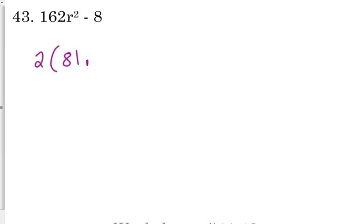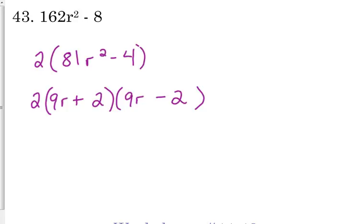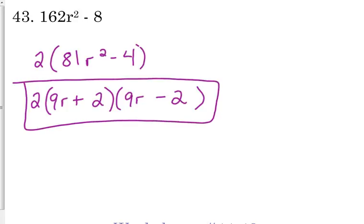That's 81R squared minus 4. Now, we have our conditions. 81 and 4 are perfect squares. 81 is 9 squared. And, 4 is 2 squared. So, two sets of parentheses. 1 plus 1 minus. 9R squared is 81R squared. And, 2 squared gives us 4. So, you can have a GCF in combination with these as well.